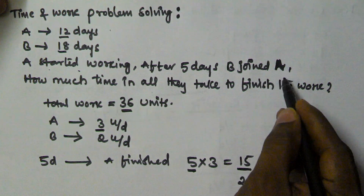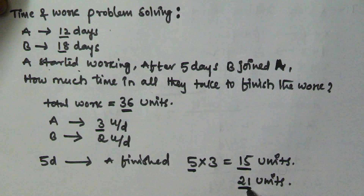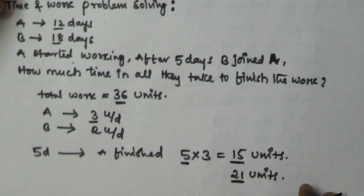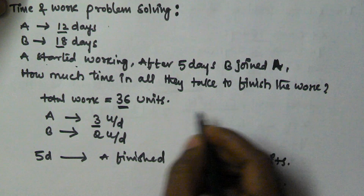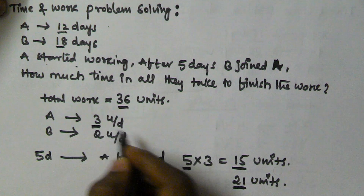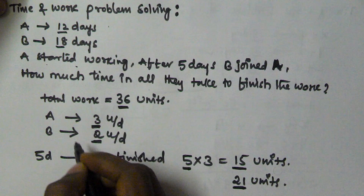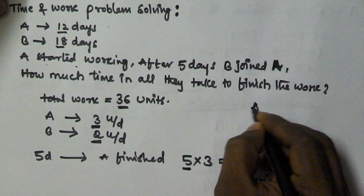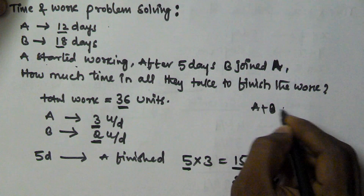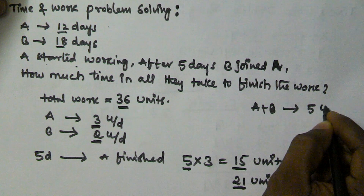B joined A after 5 days, which means these 21 units are finished by A and B together. A finishes 3 units per day and B finishes 2 units per day, so A and B together finish 5 units per day.